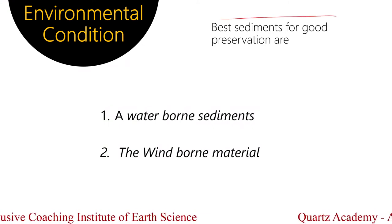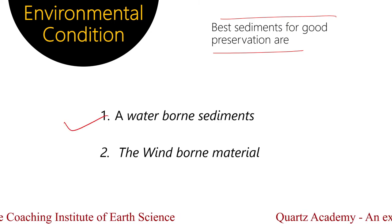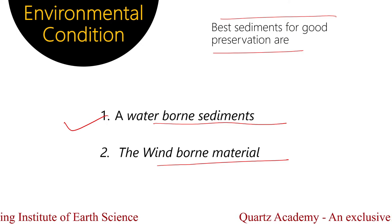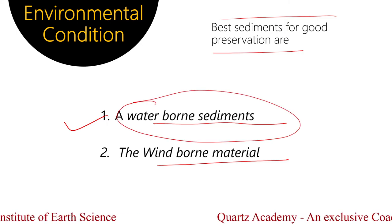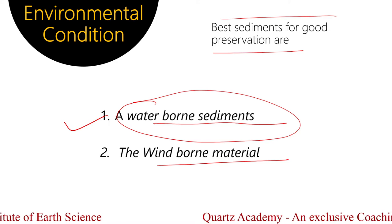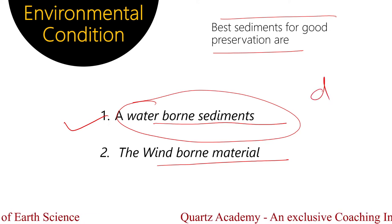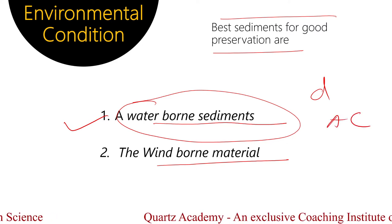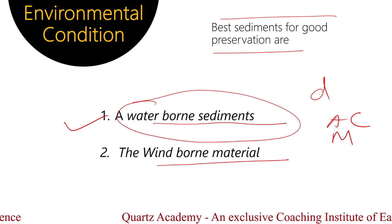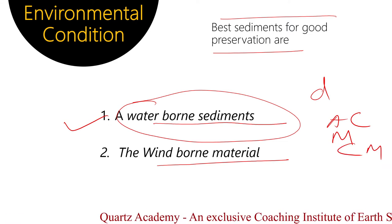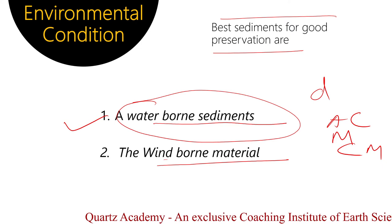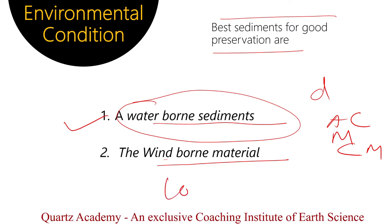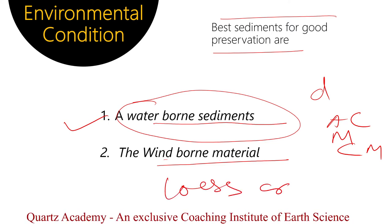We have two best sediments for good preservation. First: water-borne sediments. Second: wind-borne materials. Water-borne sediments are derived from the degradation or decomposition of old rock in the form of argillaceous clay, mud, or calcareous mud. Wind-borne materials are in the form of loess or volcanic ash.